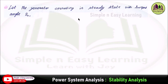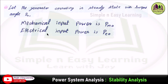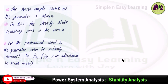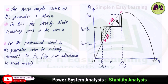Let the generator operate in steady state with torque angle delta-0. The mechanical input power is Pm0 and electrical output power is Pe0. Under ideal conditions, Pm0 = Pe0 = Pmax·sin(delta-0) — this is equation 10. On the power-angle curve, with electrical power on the y-axis and delta on the x-axis, point A is the initial operating point where Pe = Pm and the torque angle is delta-0.